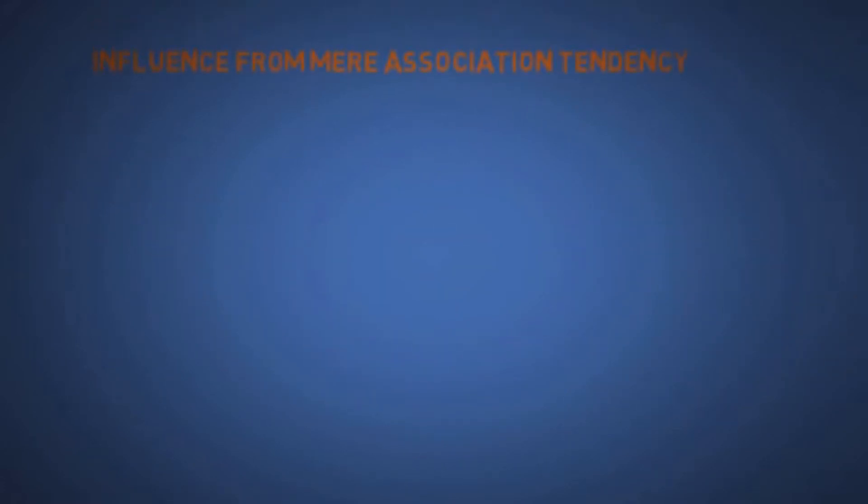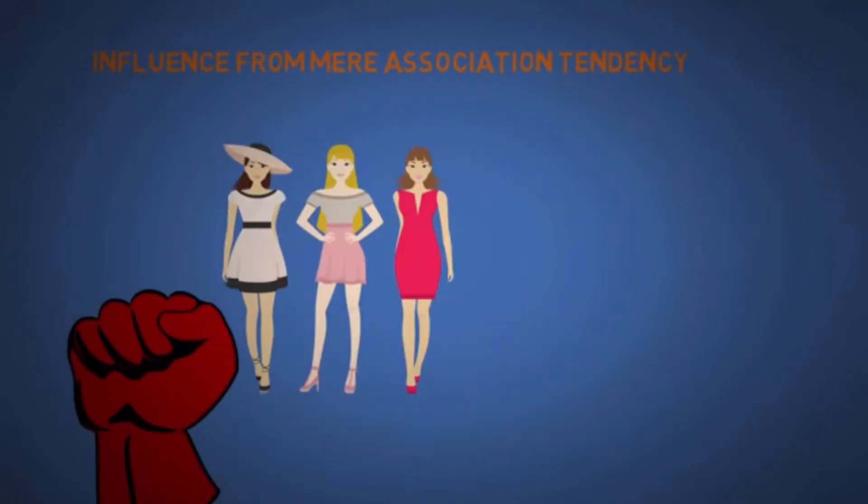The tenth is influence from mere association tendency. When Nike found out that Manny Pacquiao called the gay community dumber than animals, they immediately ended their long-term partnership with him. Association is that powerful, and that is why models are often used to showcase products. Another example is how we associate price with the quality of the item. That's why some companies make crappy products and price it high.